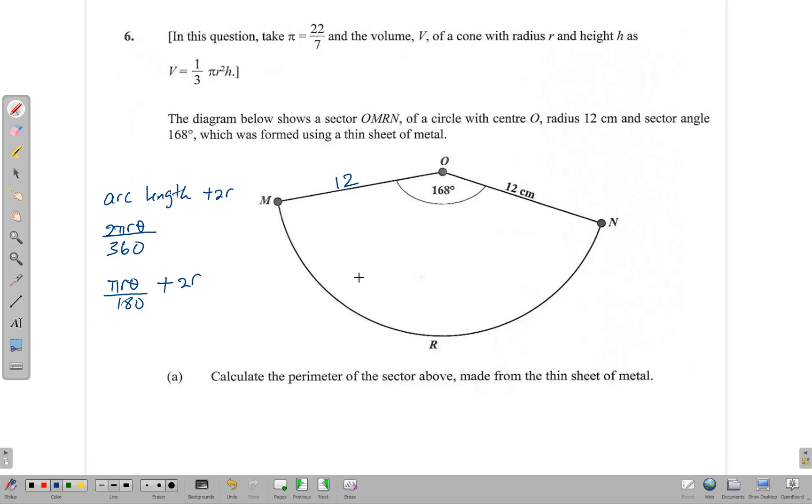Using our calculators to get a result, we have (22/7) times 12, that's the radius, times the angle which is 168, all of that divided by 180. When we do our calculation, in the numerator we end up with 6336, and dividing that by 180 gives us 35.2 centimeters.